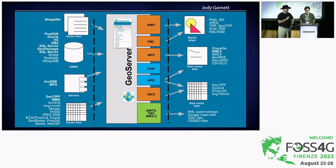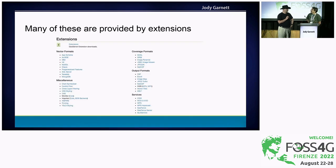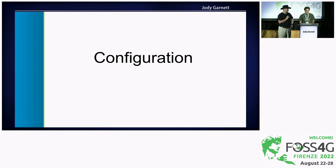So this is the 10,000 feet view — all the data sources, the services, and the outputs. As you can see, there is a lot going on. We don't even have the OGC API features and all the other OGC APIs in here, but the slide is already overflowing. Many of these functionalities are provided by extensions, so GeoServer has a core functionality and then a bunch of plugins you can download to add more. Let's have a look, topic by topic, about what you can do.